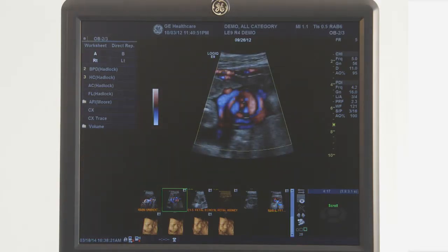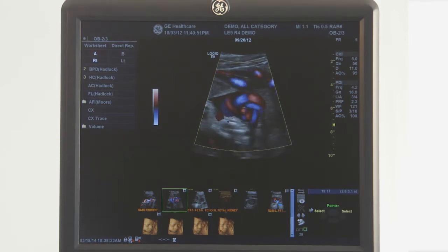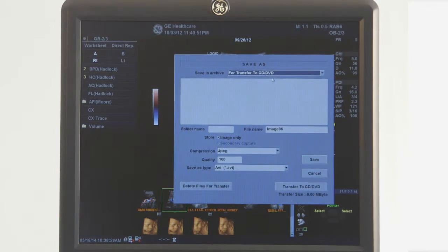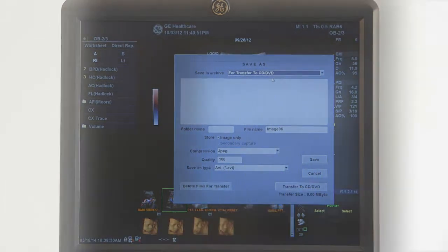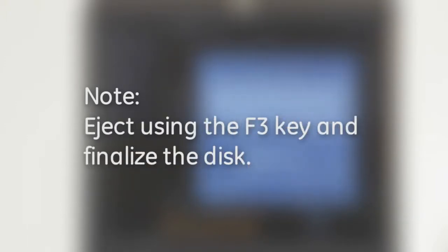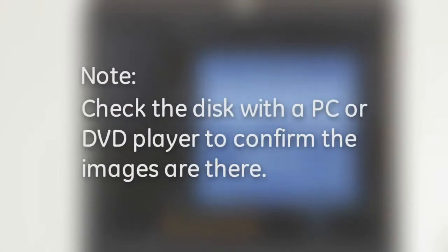If saving to a disk, choose the Save As icon one more time and then select Transfer to CD/DVD on the bottom of the window. The system will self-format the disk and copy the images. Finally, eject using the F3 key and finalize the disk. Then you can check the disk on a PC and confirm if the images are there.